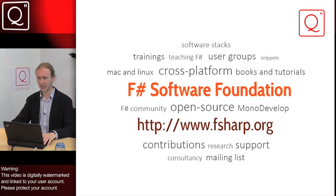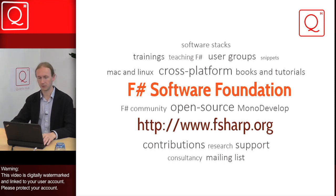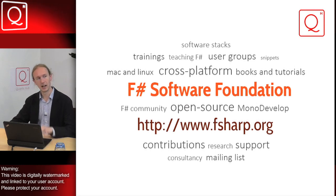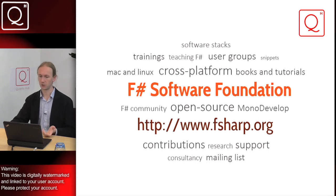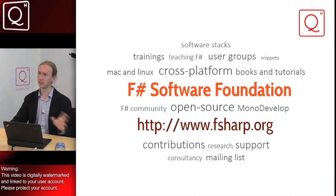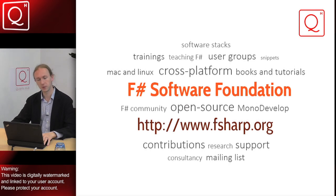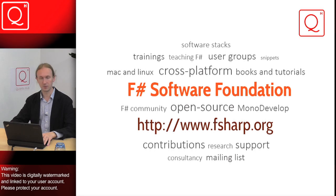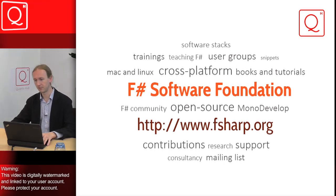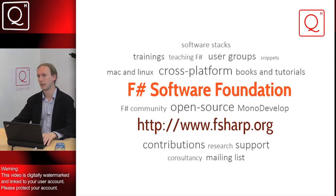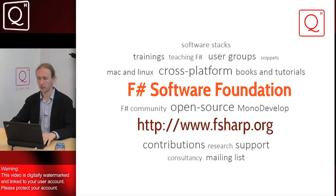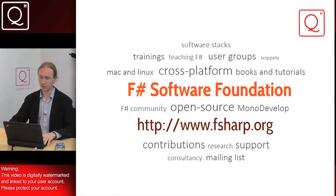Before we dive deep into F-Sharp, let me say a few things about the F-Sharp Software Foundation. This is an initiative we started with a couple of other contributors to F-Sharp. F-Sharp is available in Visual Studio — that's the version from Microsoft — but there are other companies contributing to F-Sharp, like Xamarin, who's building mobile tooling to make it possible to write F-Sharp code that runs on Android and iPhone, and Blue Mountain Capital, who are building data science tools. All of this is coordinated through the F-Sharp Software Foundation.